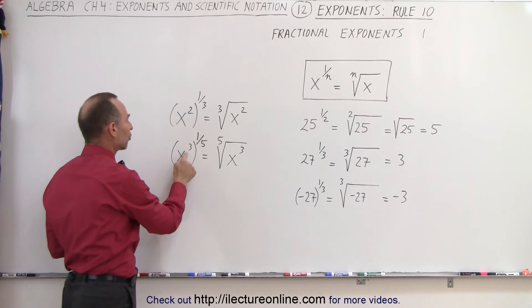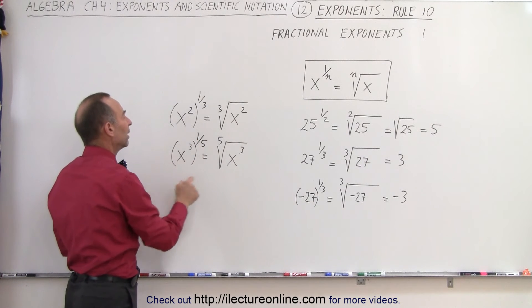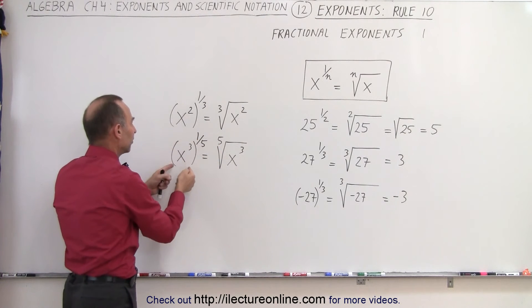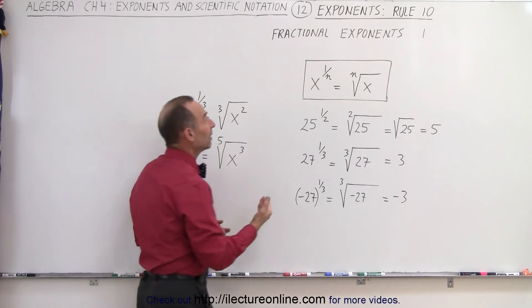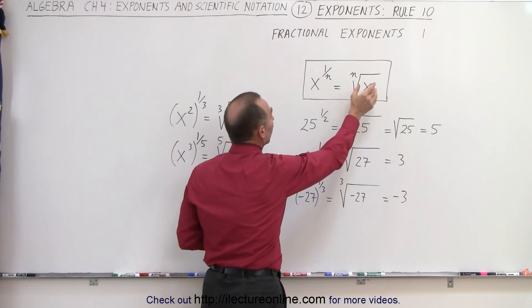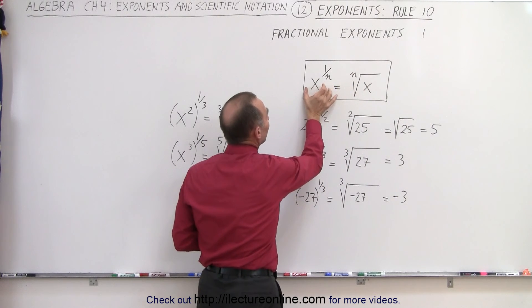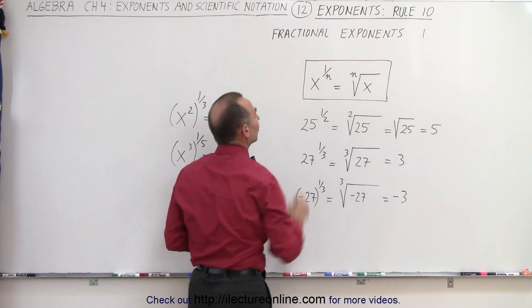The same here, x cubed raised to the 1 fifth power is the fifth root of whatever is inside the parenthesis, which is x cubed. So you can see, the best thing to do is to think of it as an nth root of the quantity inside the parenthesis or what the exponent is applied to.